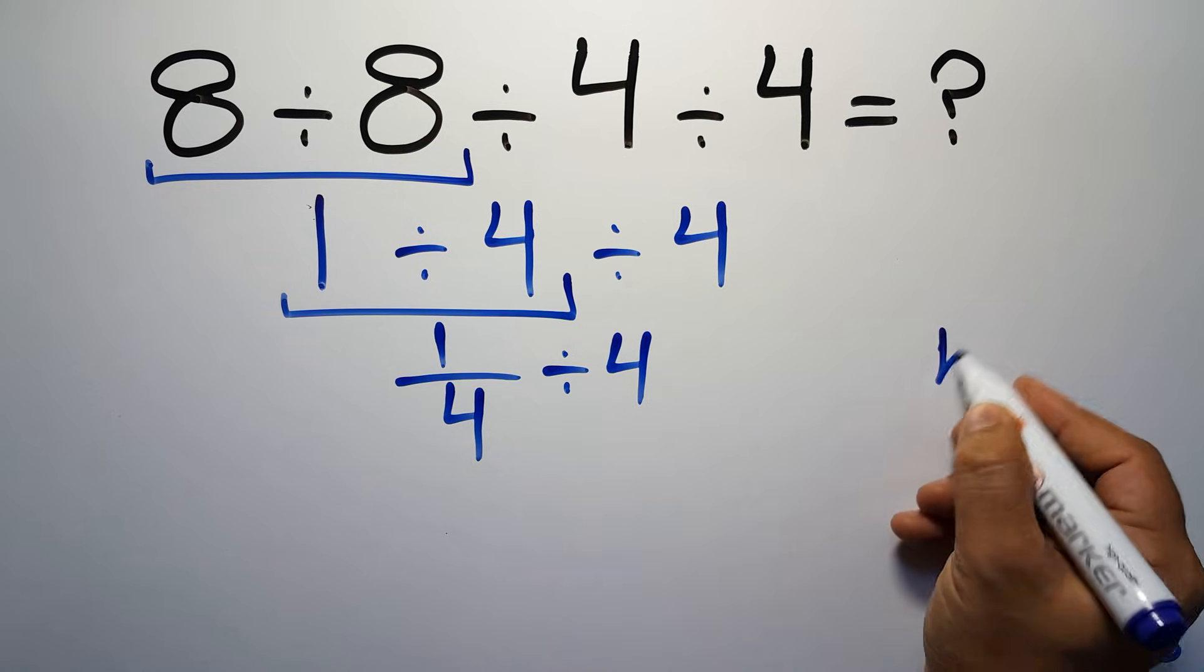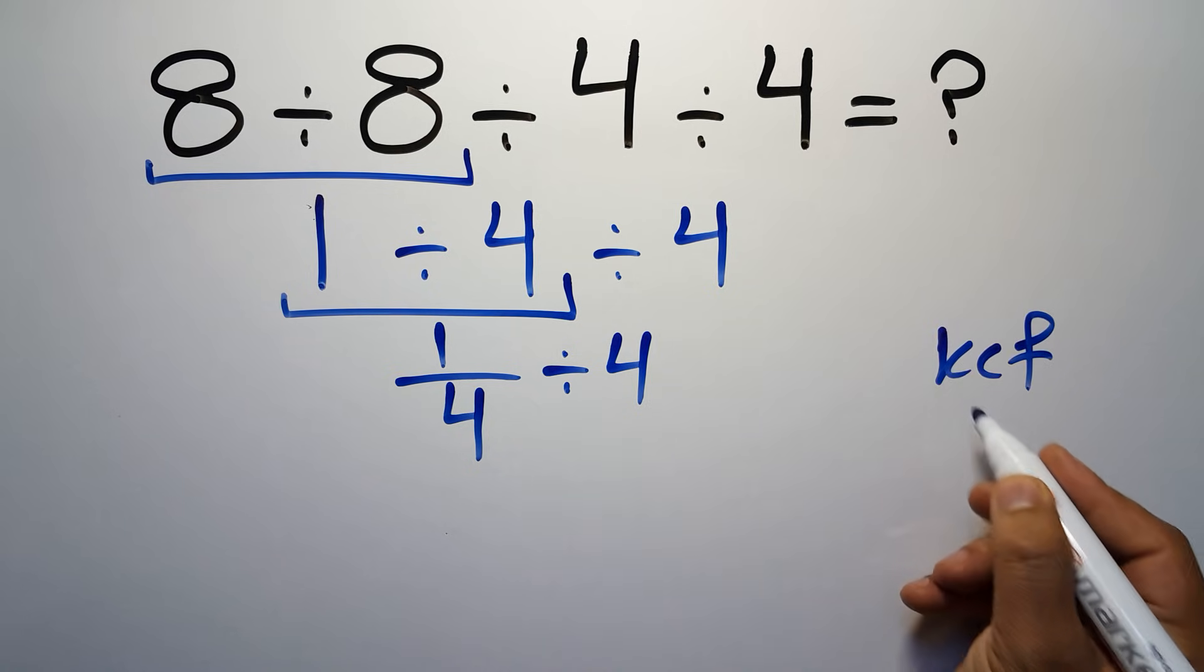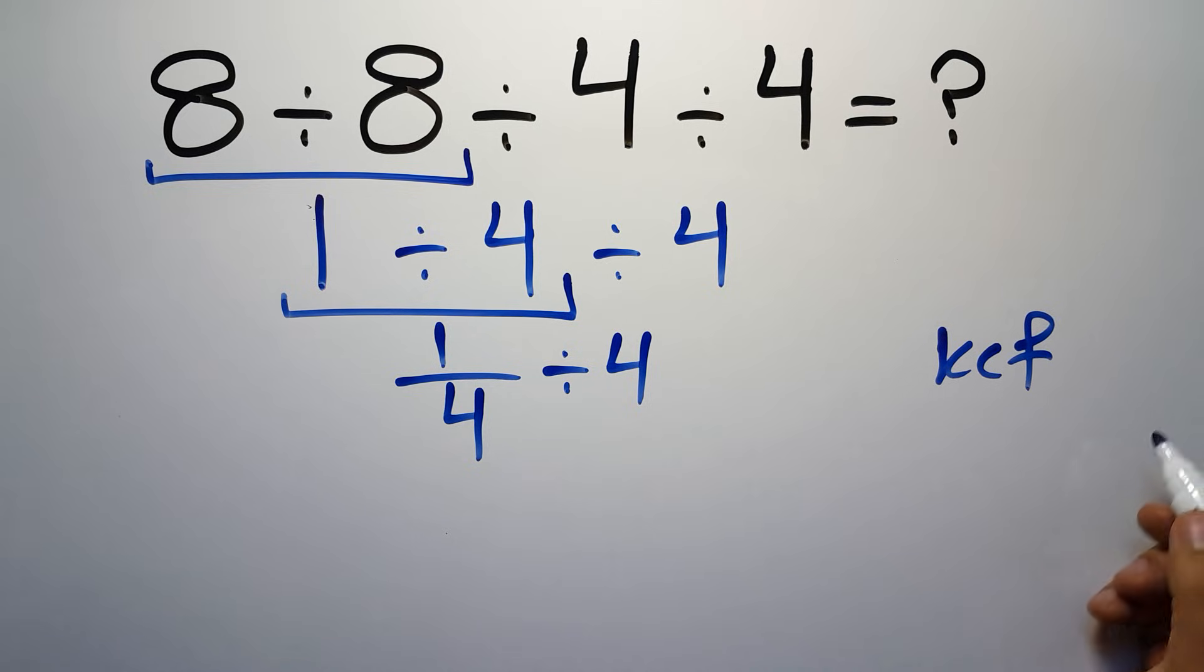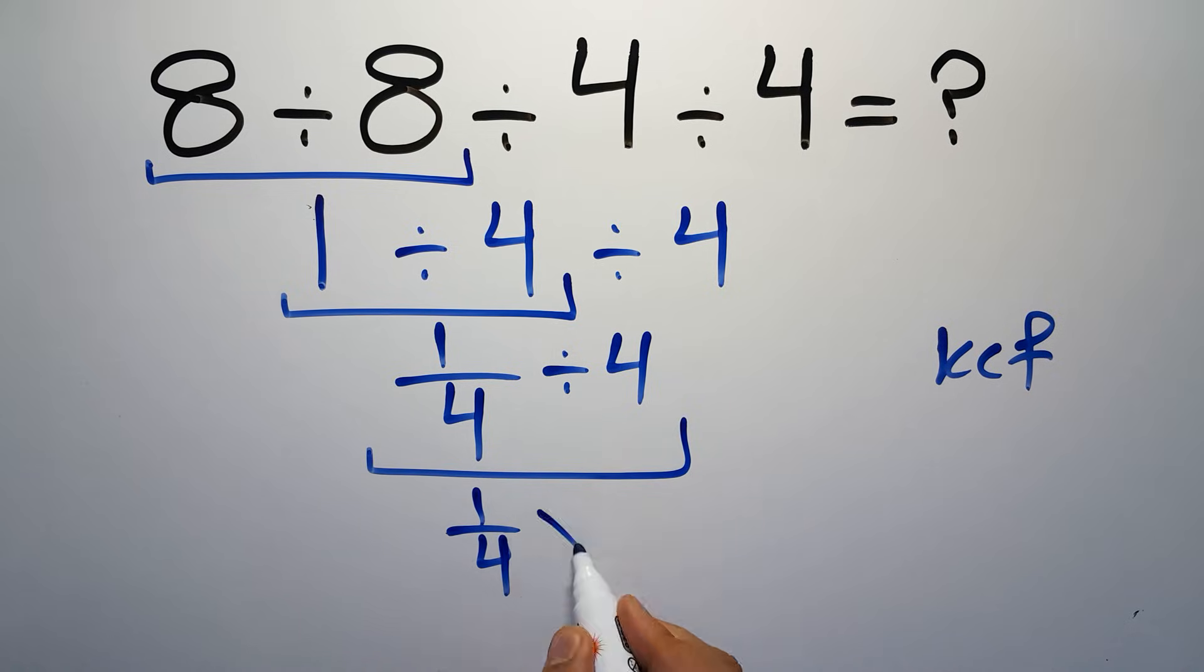K stands for keep, C stands for change, and F stands for flip. We can write: keep the first fraction, change division to multiplication, and flip the second fraction. So we have 1 over 4 times 1 over 4.